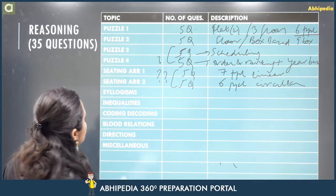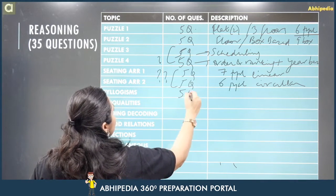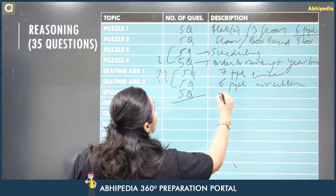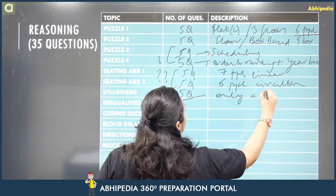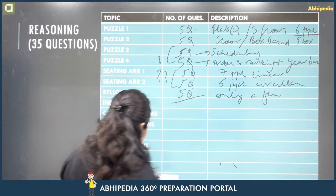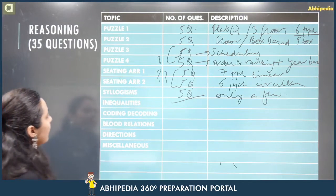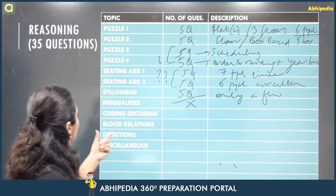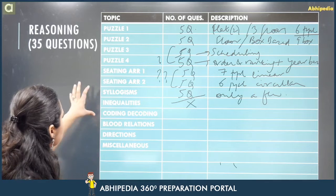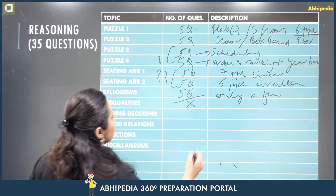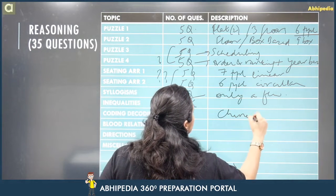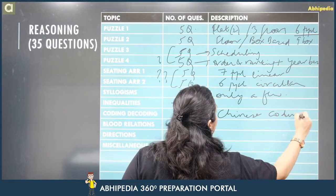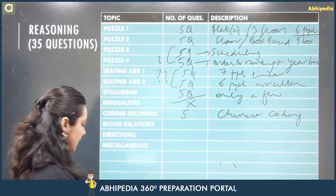Syllogisms appeared as always — only a few types came, the usual category. Inequalities were missing today — wo nahi aye. Coding-decoding mein Chinese coding came — five questions.